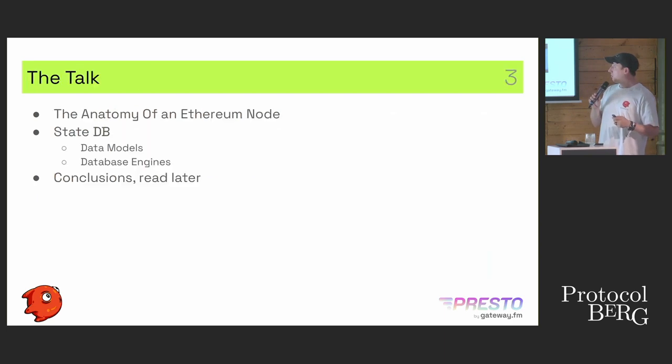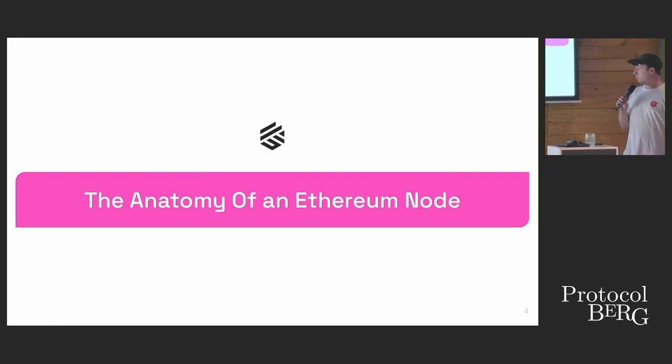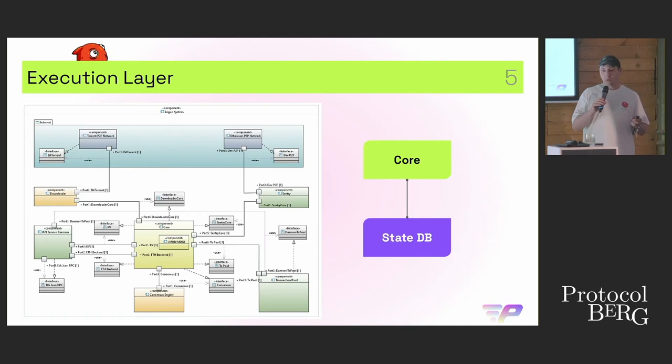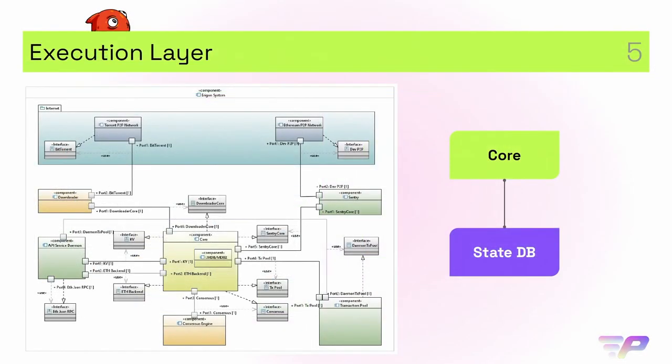I'll talk more or less about our journey at Erigon on how we got into the database choice and the database model that we're using now. We can split the talk into three things: first I'll remind you about what parts an Ethereum node consists of, then we focus straight into the database. If you look at any Ethereum node at a very high level, there is an API, a JSON RPC API that's how users interact with the blockchain network.